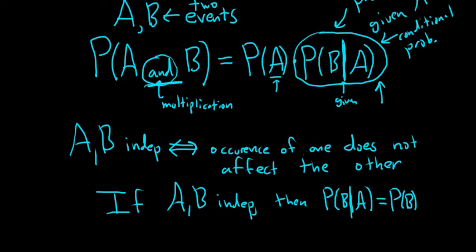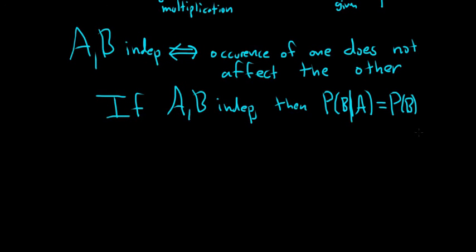What this is saying is that the formula can change. Sometimes you'll have the conditional probability in the formula, sometimes you won't. But again, it doesn't really matter, as you'll see in this example here.